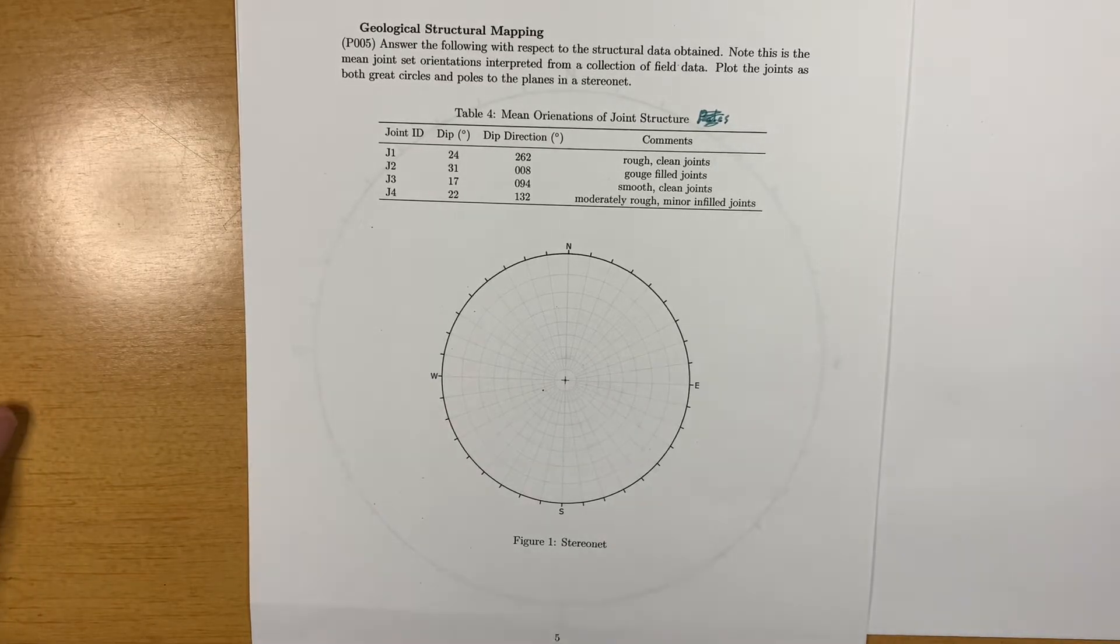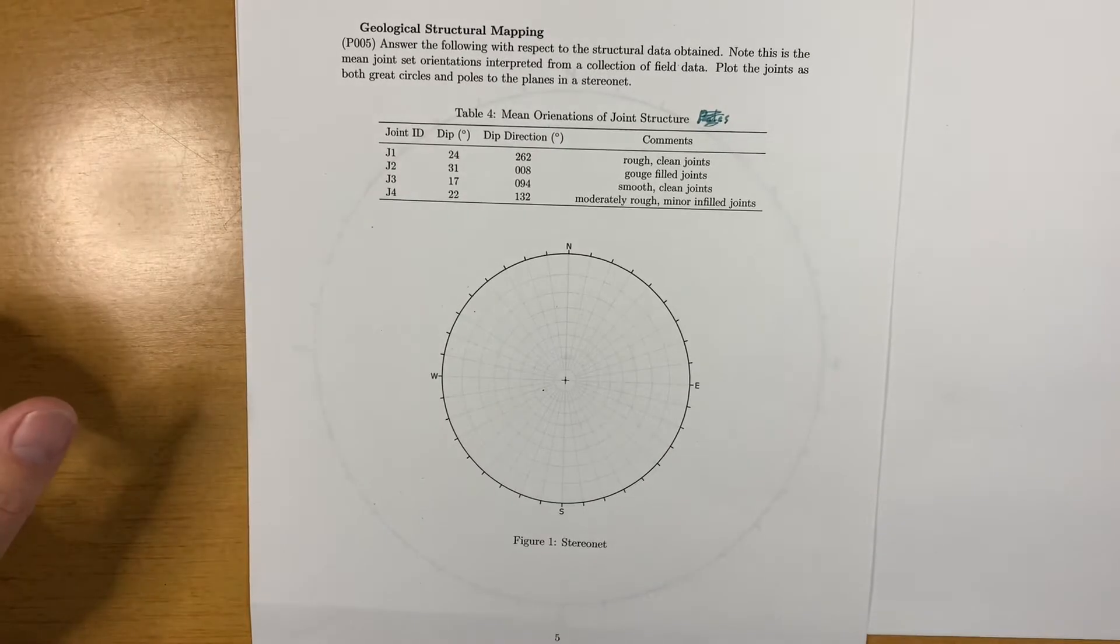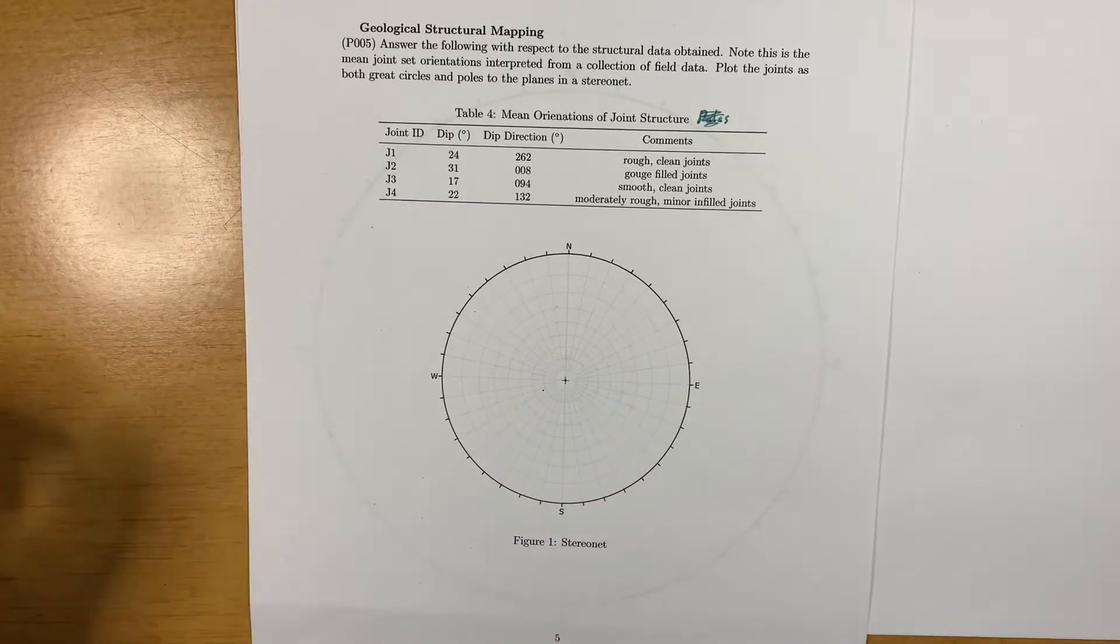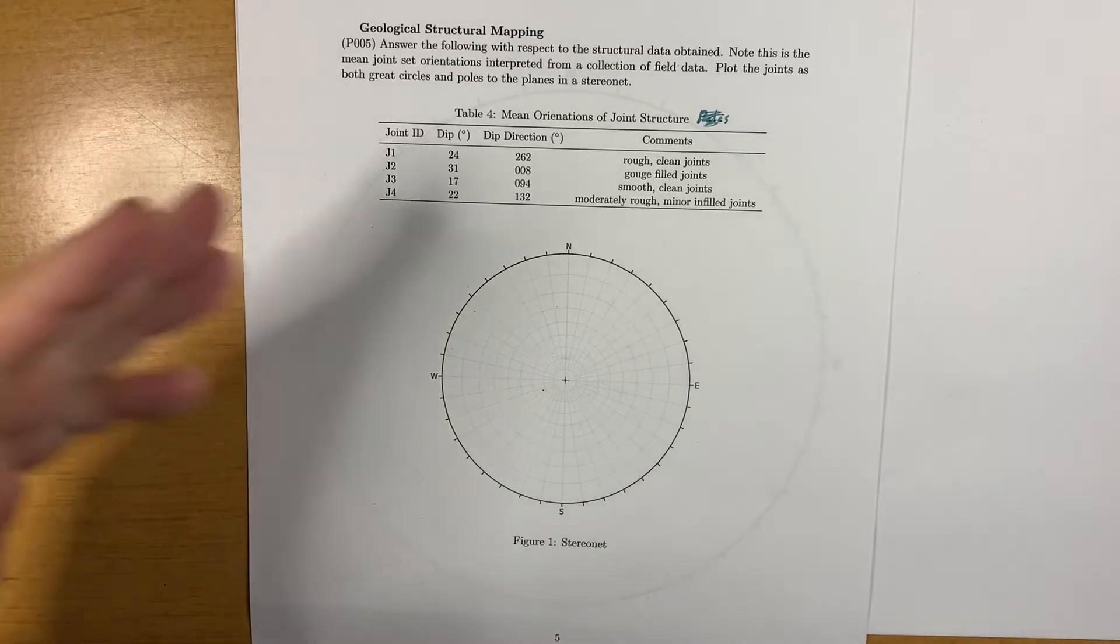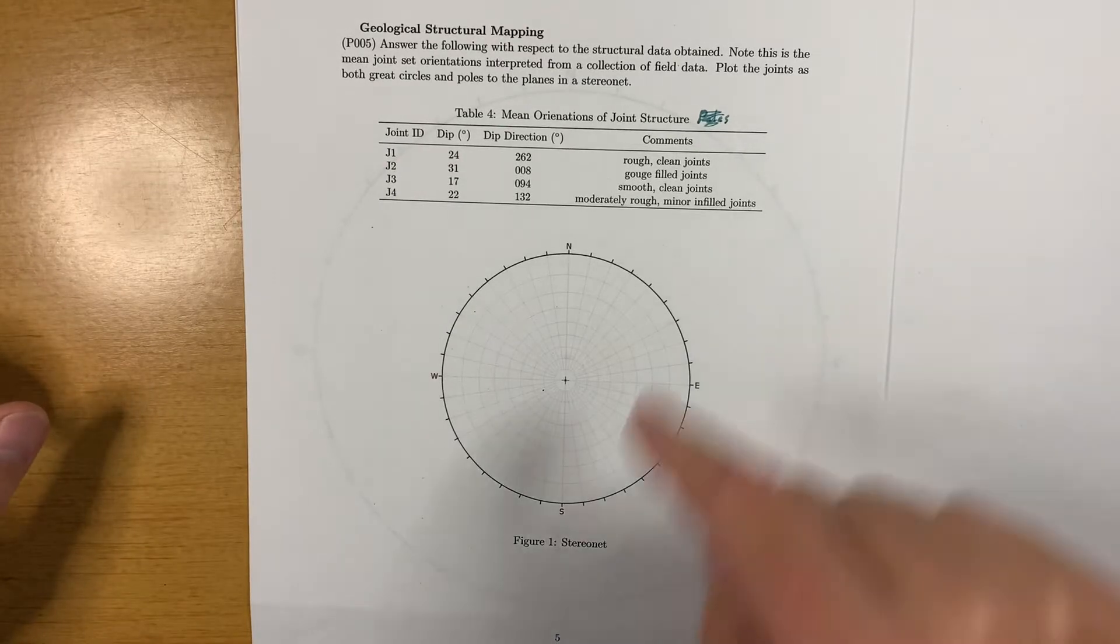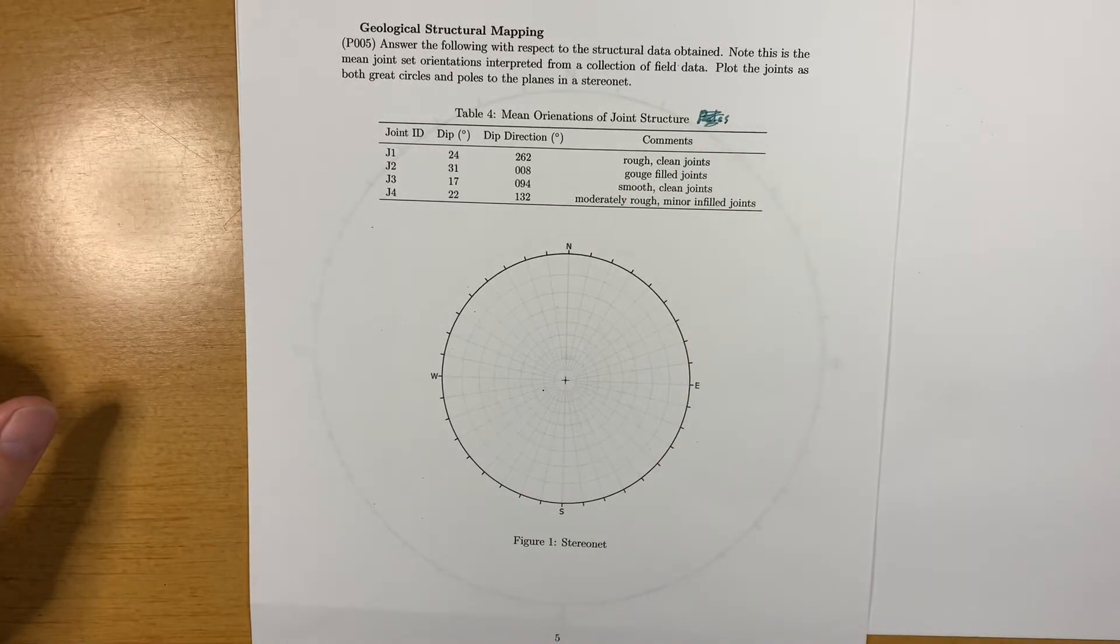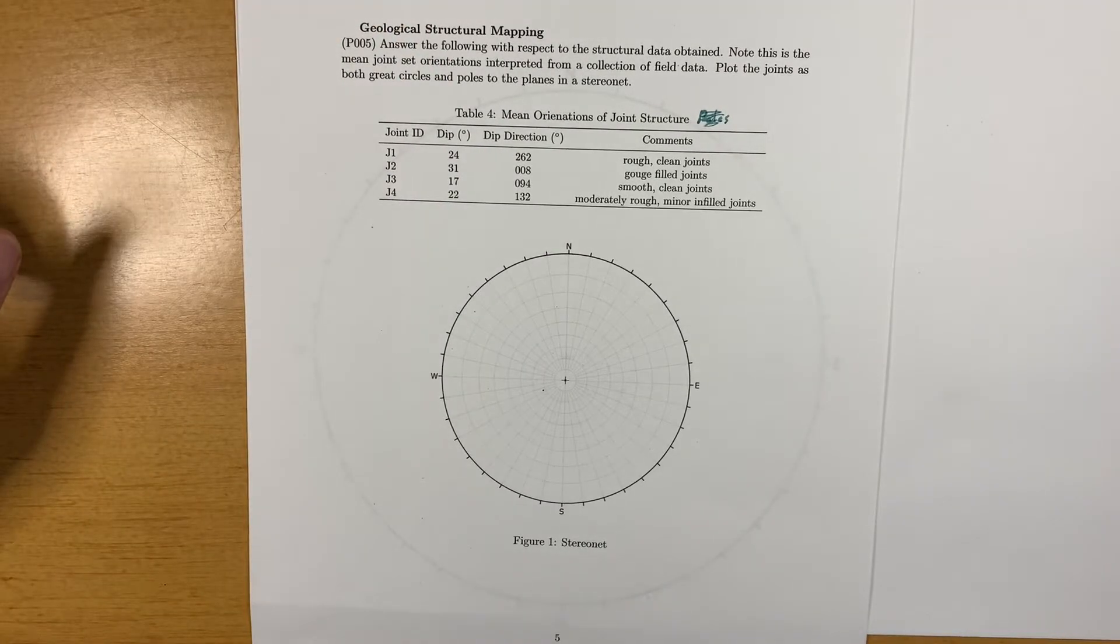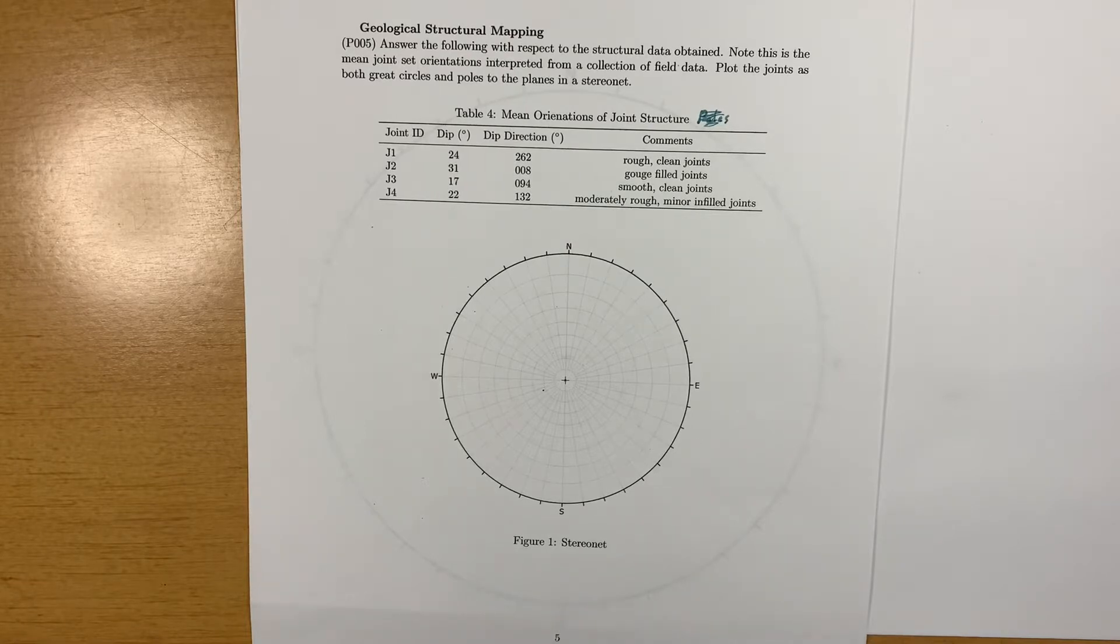The question is to basically plot the joint set information on a stereonet. We're given dip and dip direction of the joint sets. It's also asking us to plot the plane and the pole to the plane. So we're going to plot both the plane and the pole to the plane.